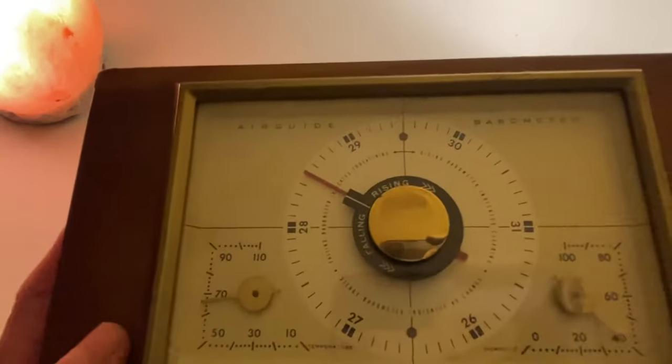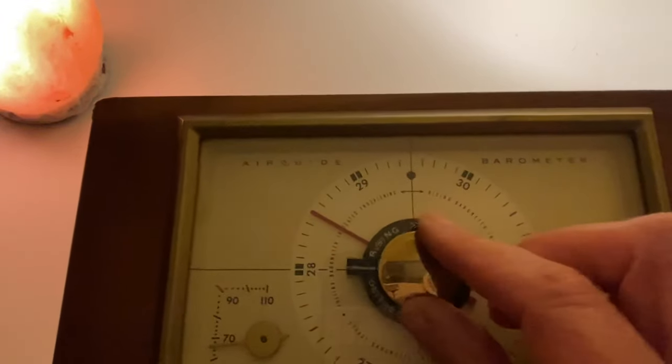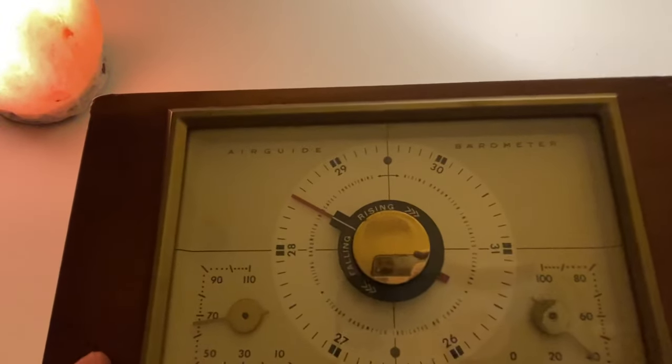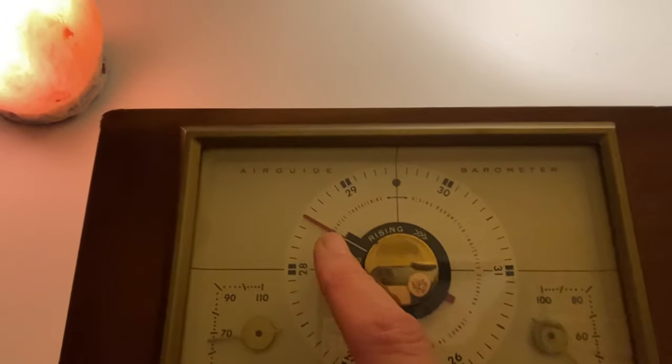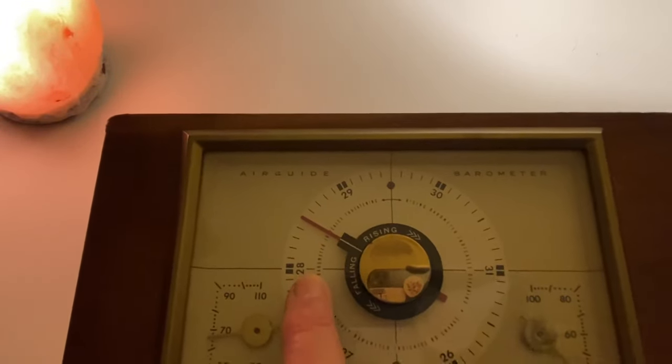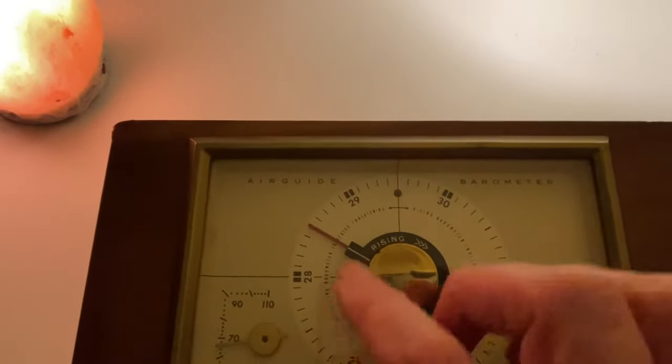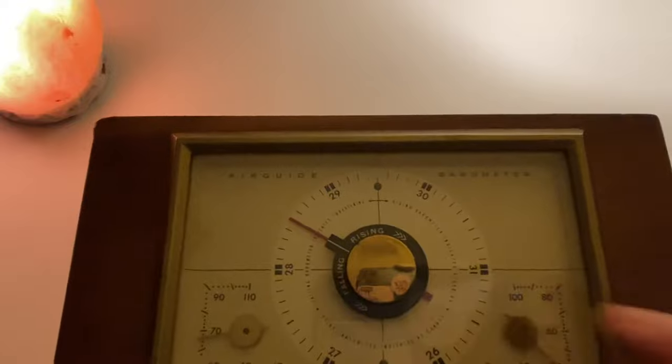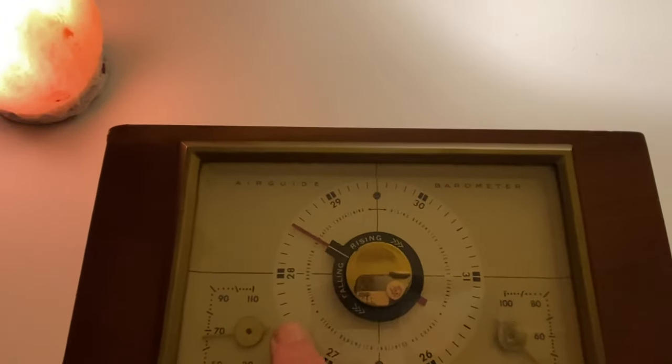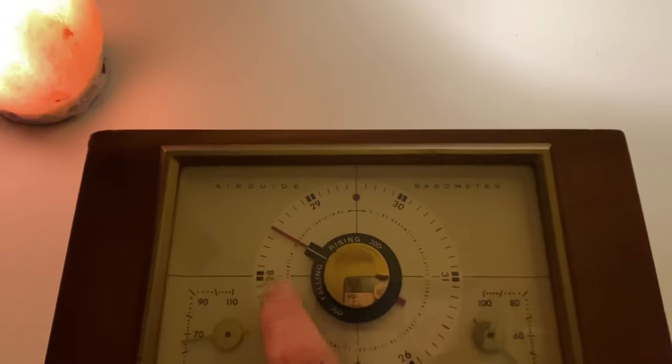And so right now it's there, so you can set this to wherever that red line is. You can set it right on the red line. Now if I wake up in the morning and the air pressure has fallen to here, that is like what they call mercury falling. It's technically not, but it's like the pressure is falling. That means usually that bad weather is coming, like a rain or a snow.